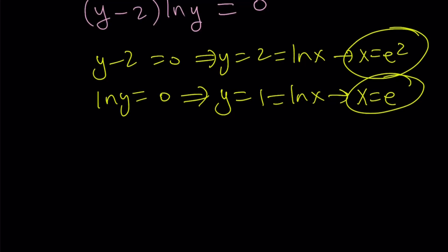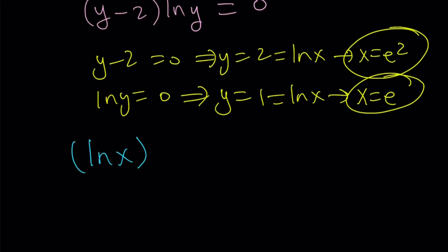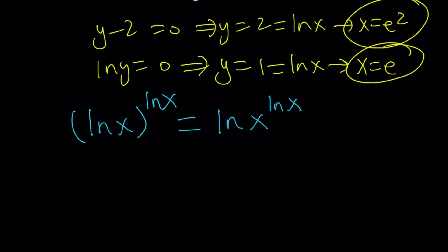So these are the solutions. But do you think these would satisfy the original equation? I mean, they are supposed to, right? But let's just go ahead and check for fun. We have ln x to the power ln x, and that should equal ln x to the power ln x. Notice that when you use parentheses, it makes a huge difference. Well, for these values, it doesn't. But for general other values, there is tons of other values for which this equation is not true.